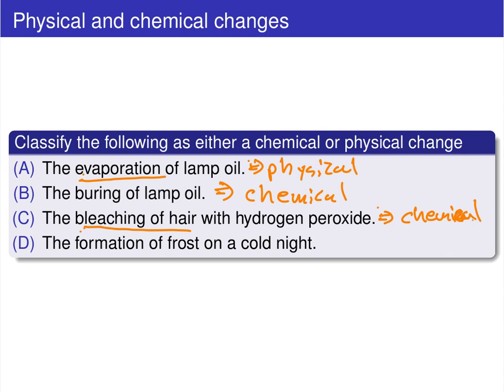The formation of frost on a cold night is essentially taking water out of the atmosphere, condensing it onto leaves or another surface, and freezing. But the water is still water — H2O molecules from the air turning into solid H2O molecules on a surface. This is an example of a physical change.